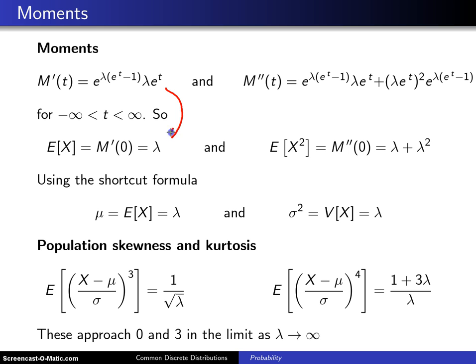When you take a second derivative with respect to t using the product rule, and plug in t equals zero, you get lambda plus lambda squared. Again, fairly tractable.